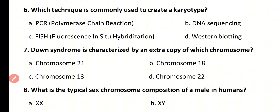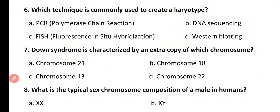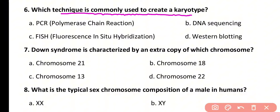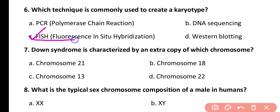Question number 6. Which technique is commonly used to create a karyotype? Options: PCR, DNA sequencing, FISH, or western blotting. Correct answer is option C. FISH, which stands for fluorescence in-situ hybridization technique, is commonly used to create a karyotype.